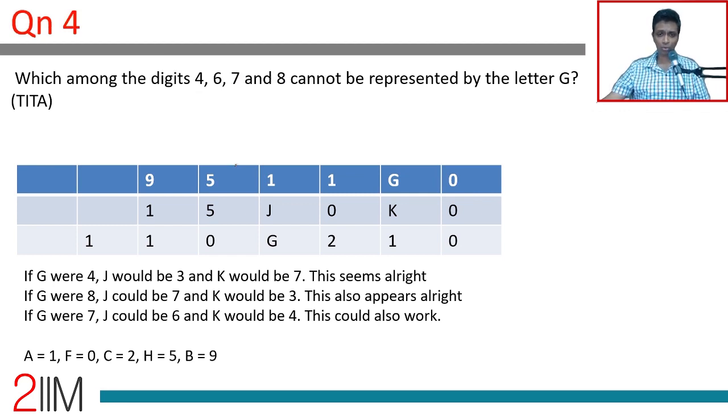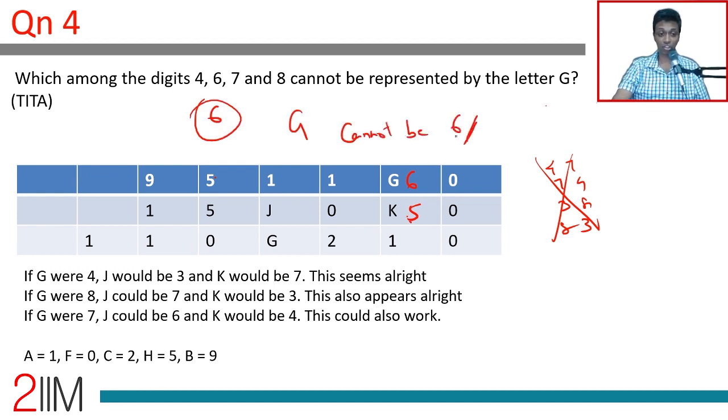Which among the following digits 4, 6, 7, 8 cannot be represented by the letter G? We had 4 and 7, 7, 4. We had 3, 8, 8, 3. 6 is not even possible. If this were 6, this has to be 5. H is 5. So K cannot be 5. G cannot be 6. 6 is the answer. G cannot be 6. So 6, it is not possible for it to be 6.